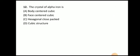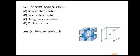Next question: The crystal structure of alpha iron is? The answer is BCC — body-centered cubic. Here you can see the BCC unit cell: one atom is present at the center and eight atoms are present at the corners. This type of crystal structure is known as alpha iron.